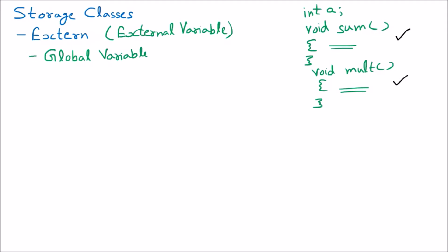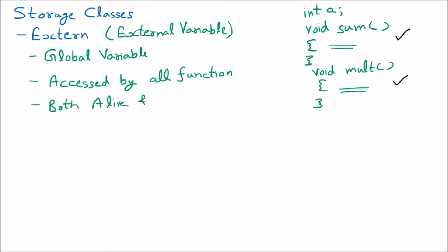The external variable is accessed by all the functions because it is global. One more thing about the external variable is that they are both alive and active.